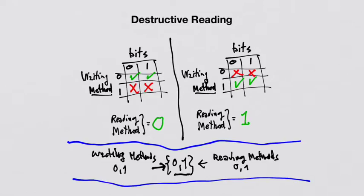Destructive reading is based on the idea that a bit of value of either zero or one can be written by two distinct methods. We call them method zero and method one. And it can be read by two reading methods, call them zero and one. So a bit can be generated using two distinct methods and can be read using one of two methods.